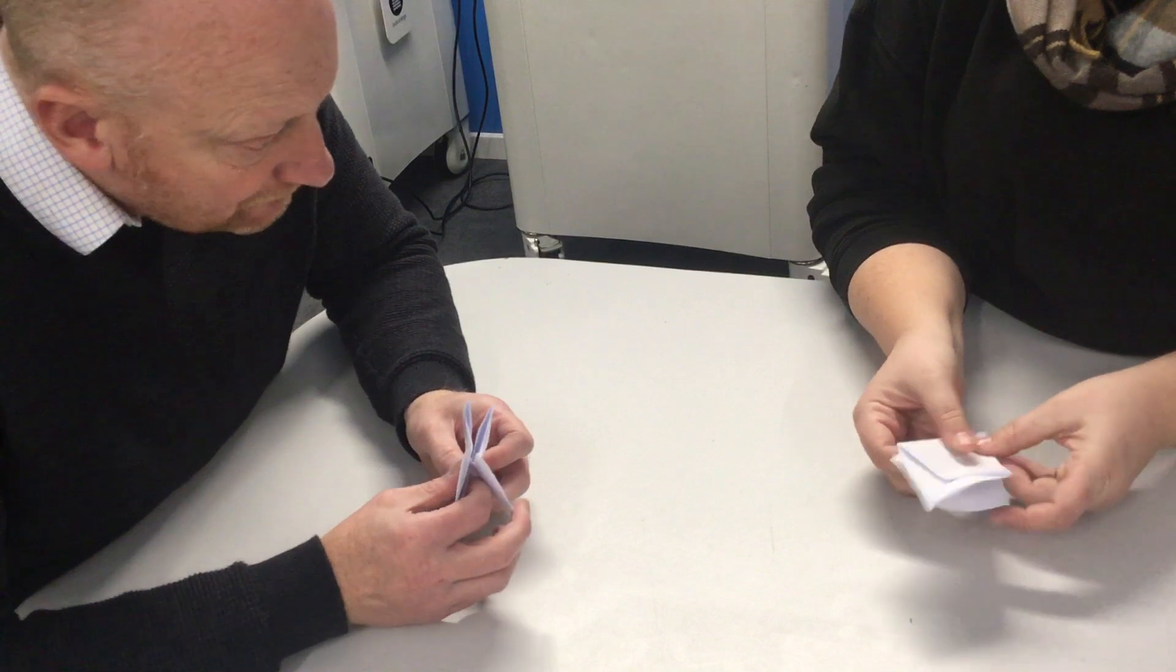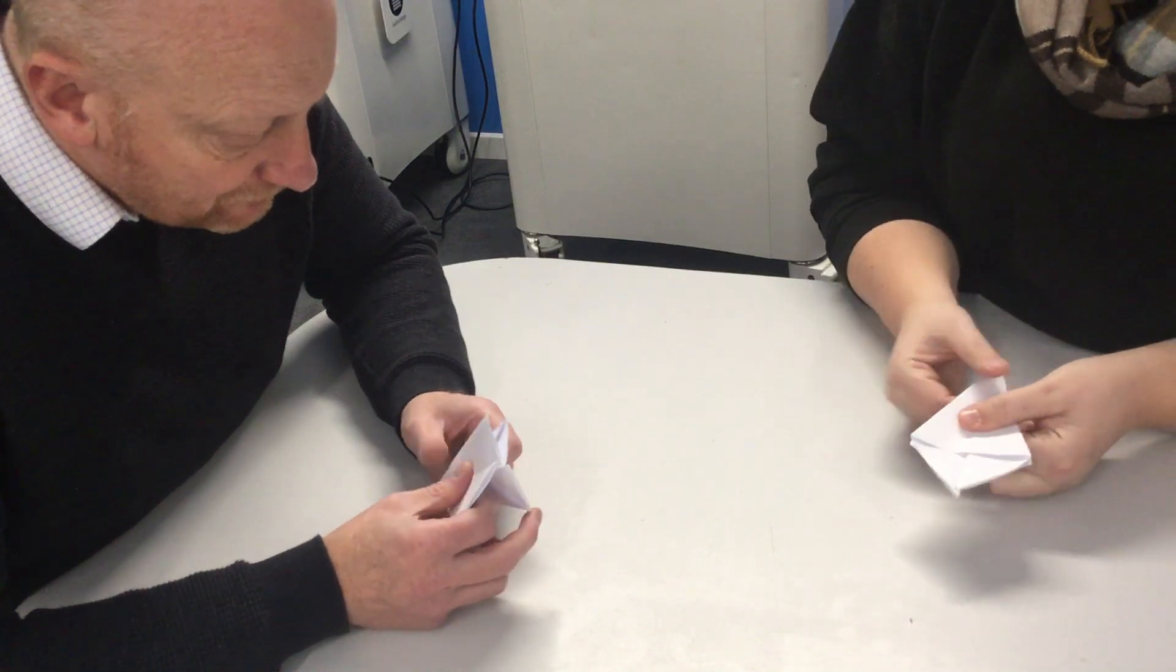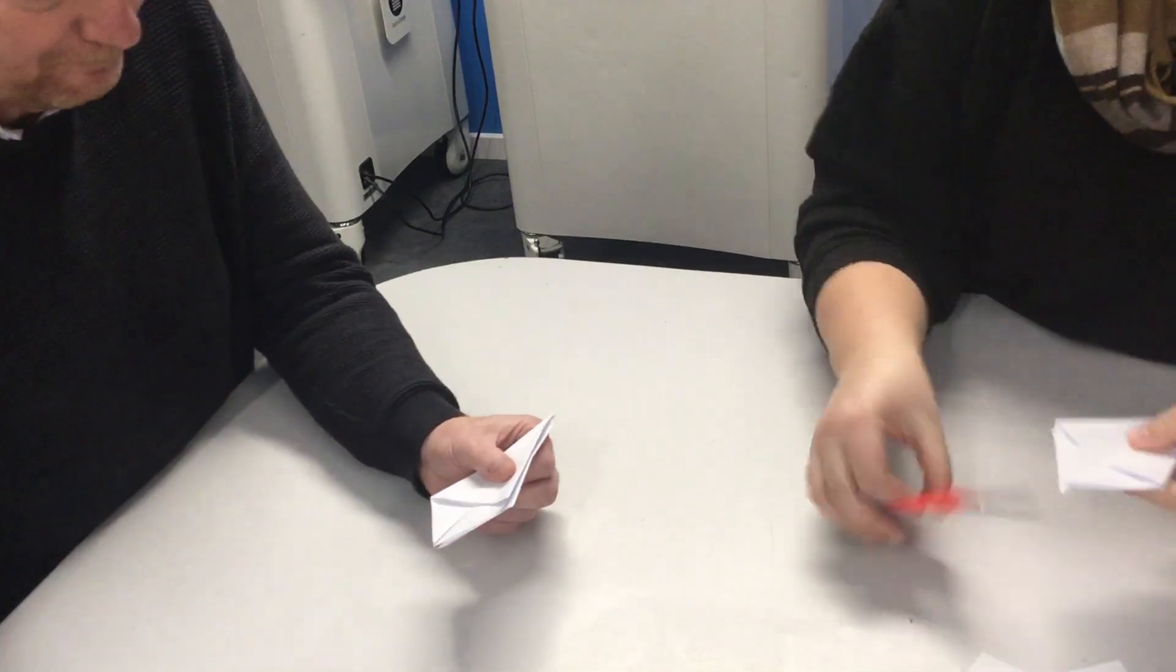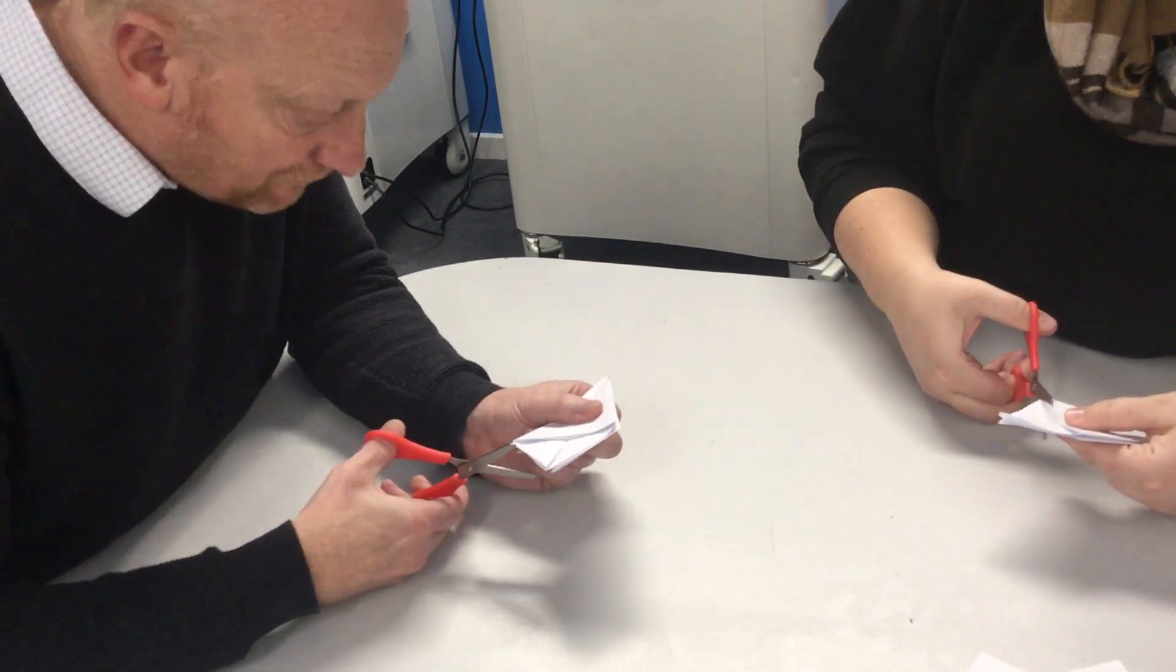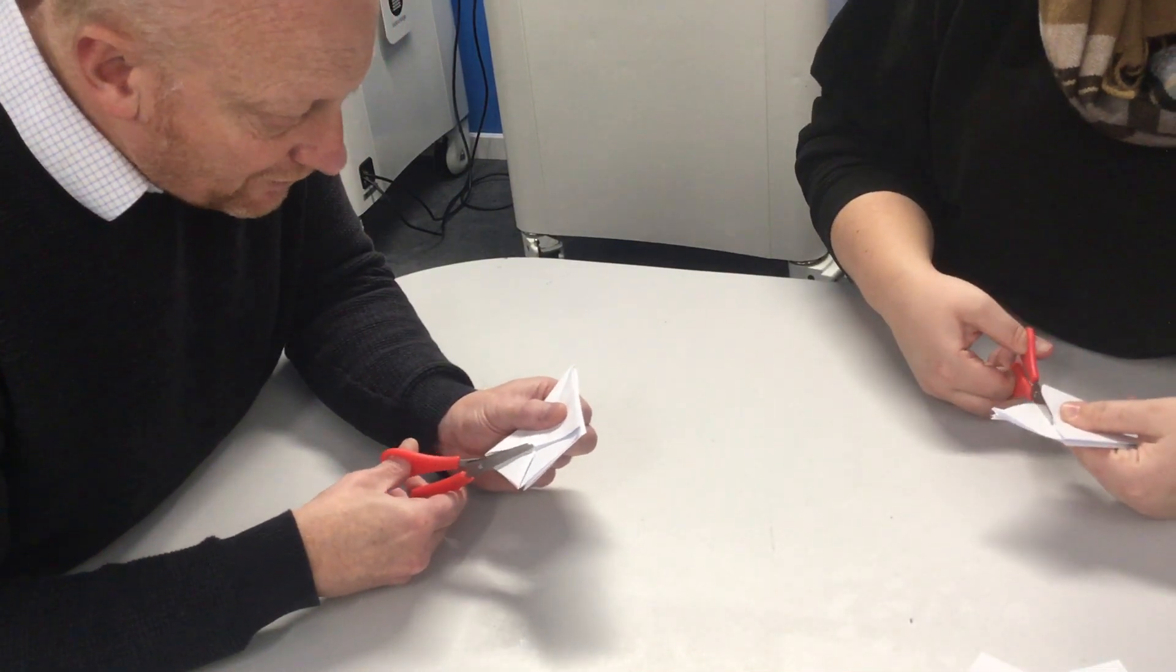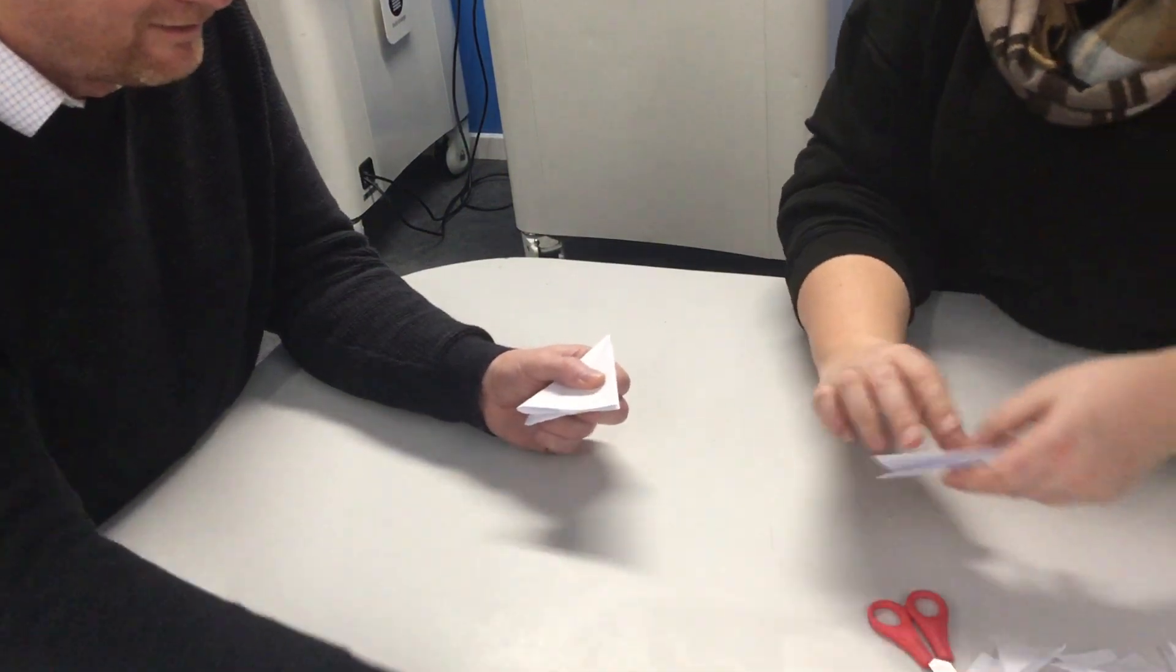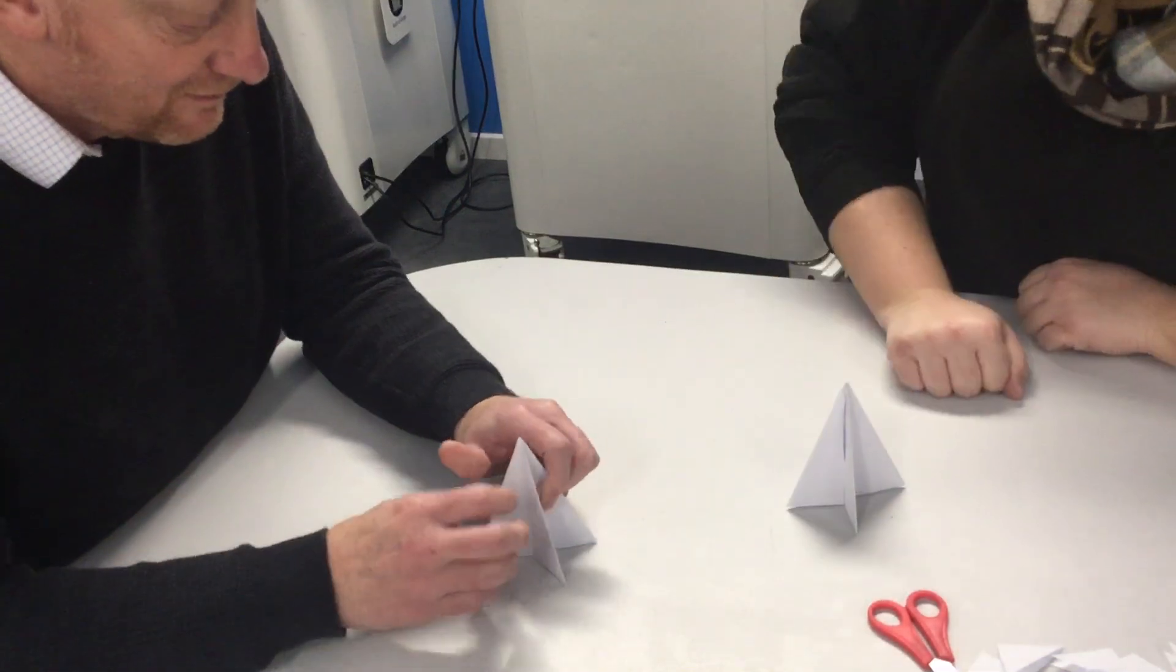So you can switch it around to see this view instead. And then you can cut along that line and it will give you a nice flat bottom. Which is what we all want isn't it? Which will then stand up like a little tree.